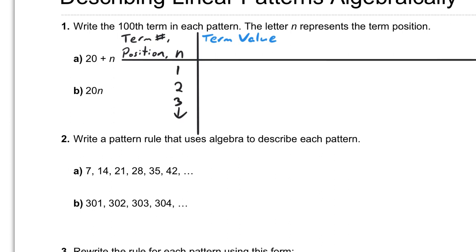Then we have our term value. This time, our term value is represented by this algebraic expression. This expression is 20 plus n. So when we're trying to figure out the value of each of these terms, all we need to do is substitute the value of this for our n.